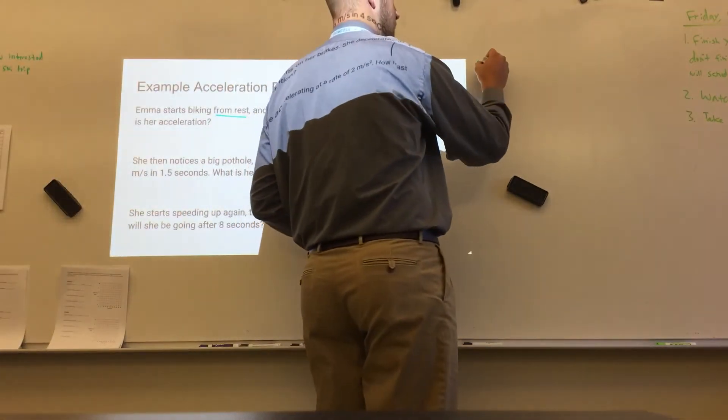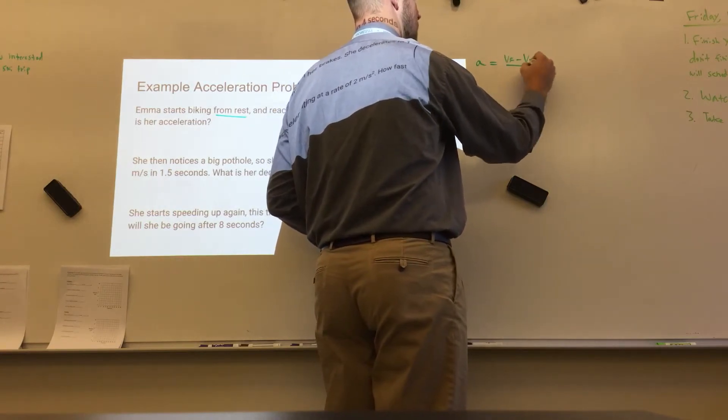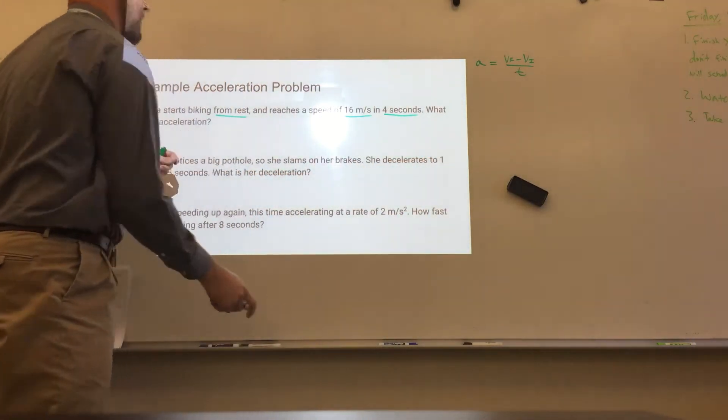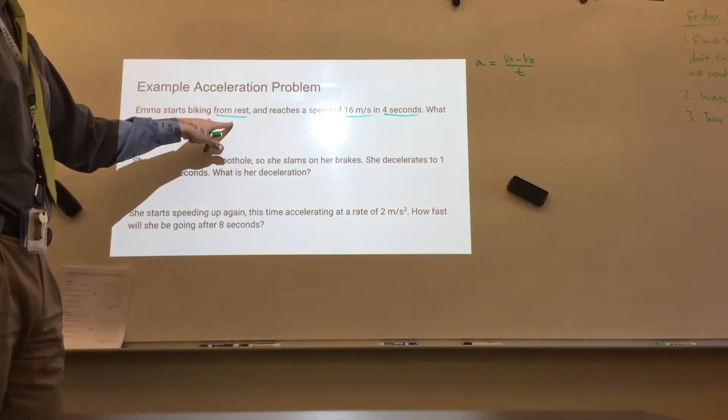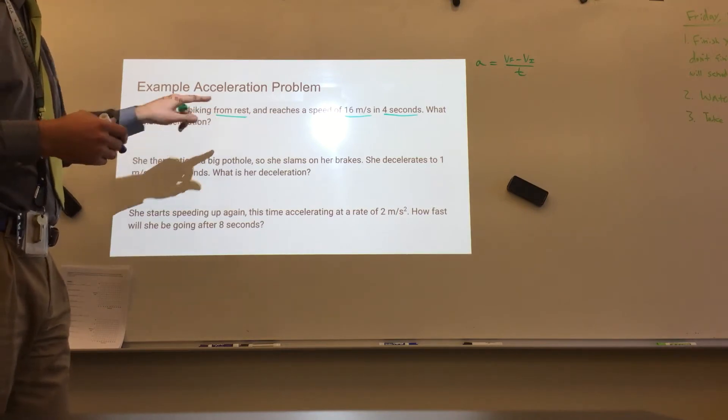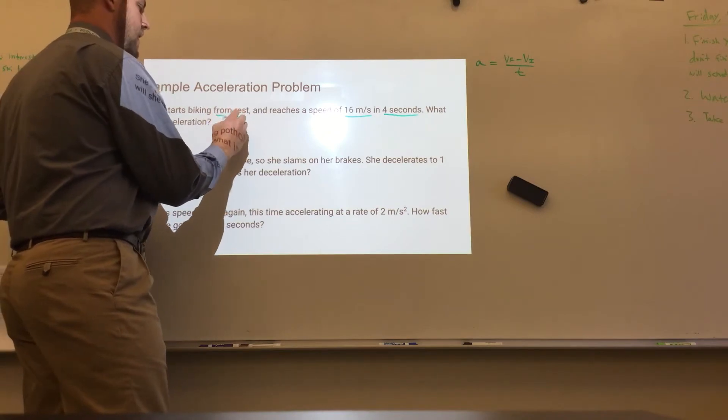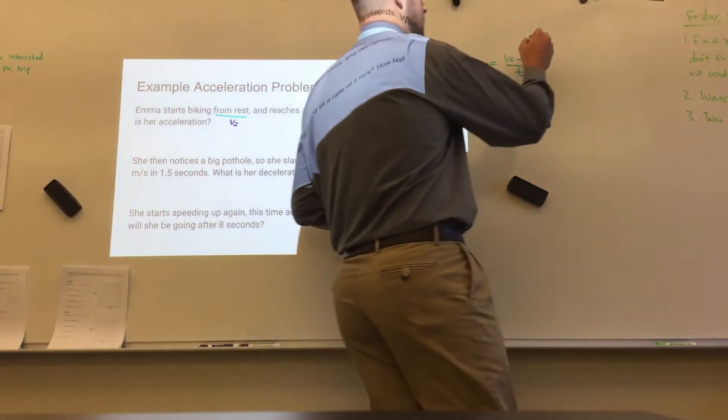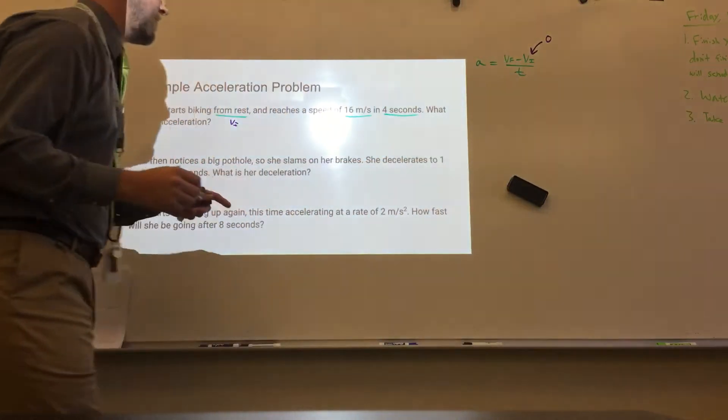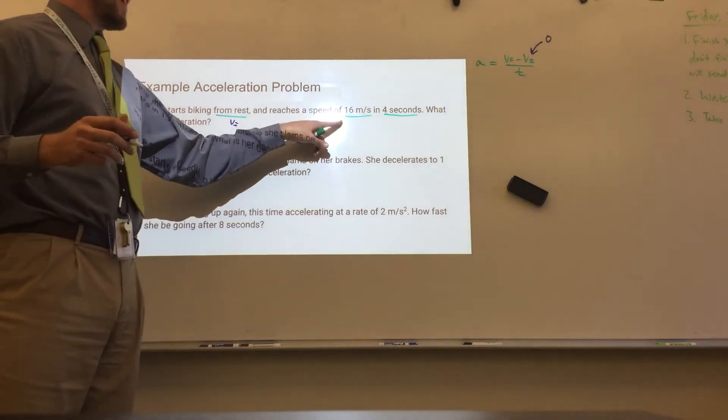So, a equals vf minus vi over t. From rest, when she started she was not moving at all, that means her initial velocity, that's the vi right there, that vi is going to be zero. So I'm going to plug in zero for that. She reaches a speed of 16 meters per second. So that's her final velocity, at the end, what she was going.